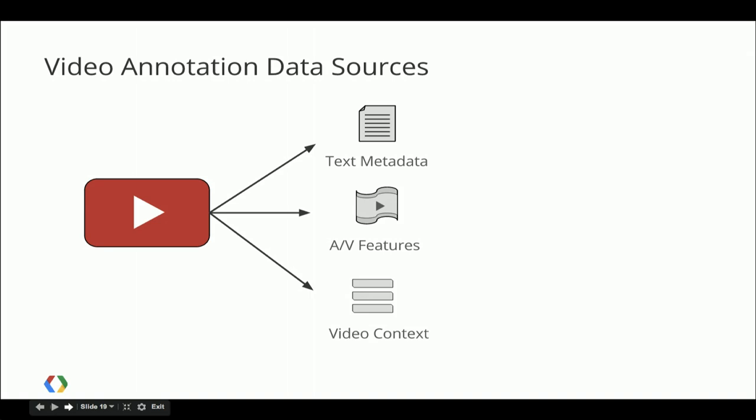We want to list these in the order of their availability. First and foremost, we have the text metadata. At the time of upload, the uploader will insert some text — title, description, and so on — and we have this immediately available. A few minutes after upload, we'll have extracted some audiovisual features that we can use to classify the video. And finally, if the video is popular enough, there may be some context both on the open internet and on YouTube that we can use to further guide annotation.